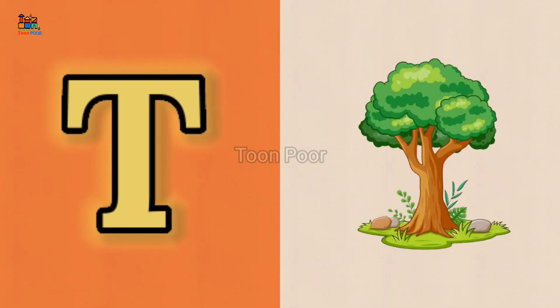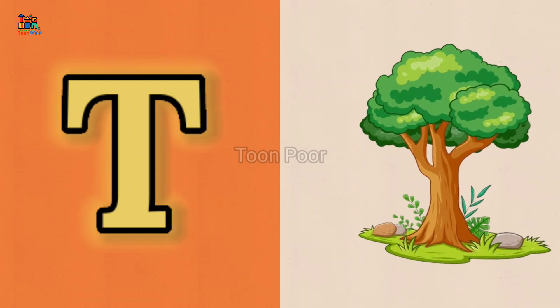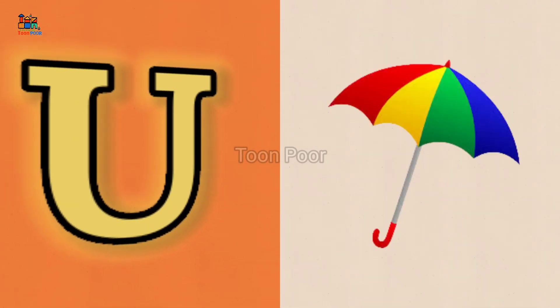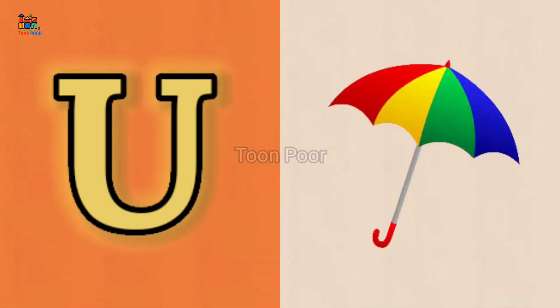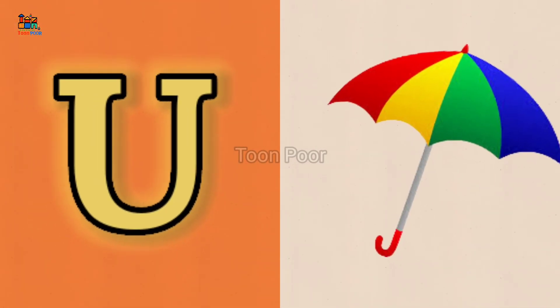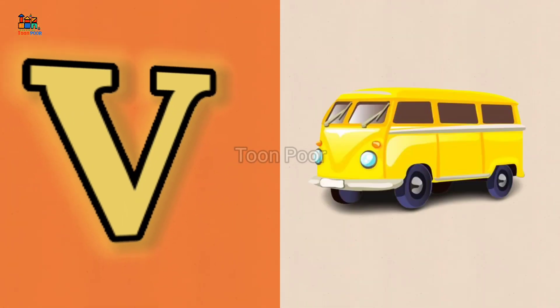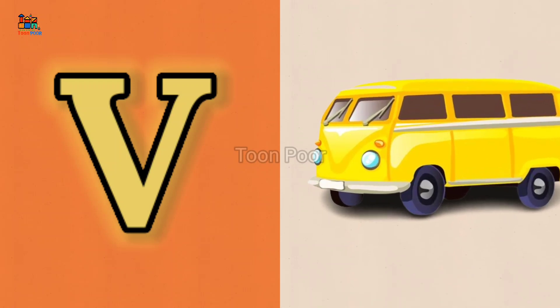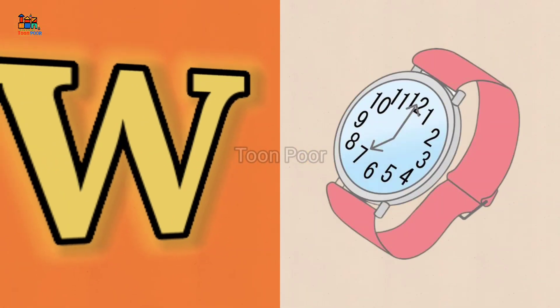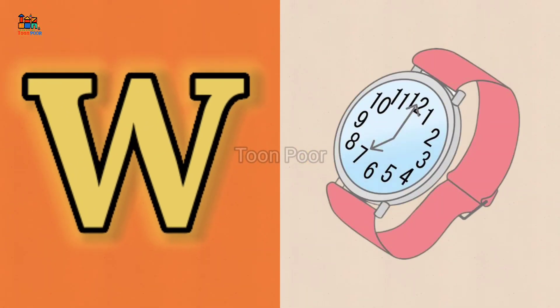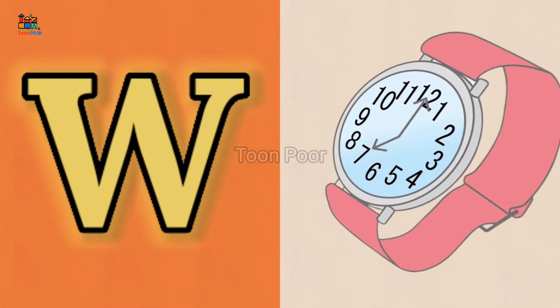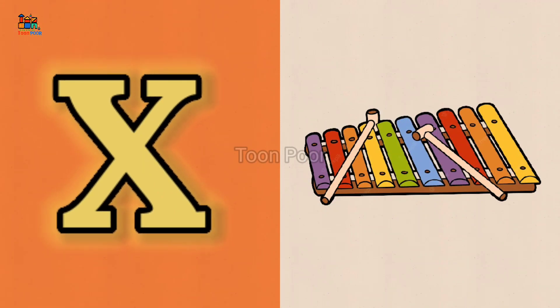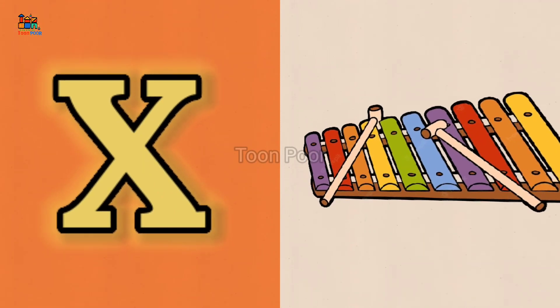T for tree, U for umbrella, V for van, W for watch, X for xylophone.